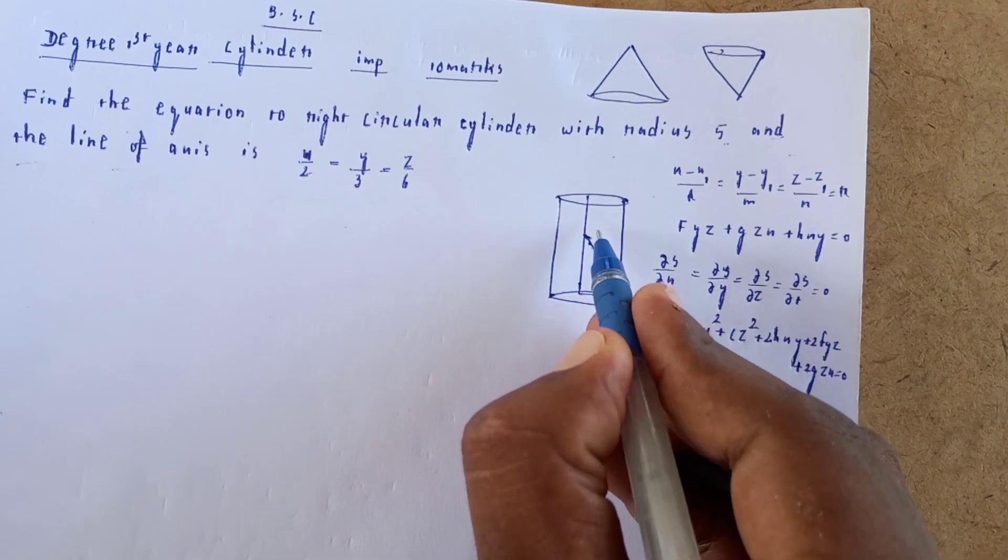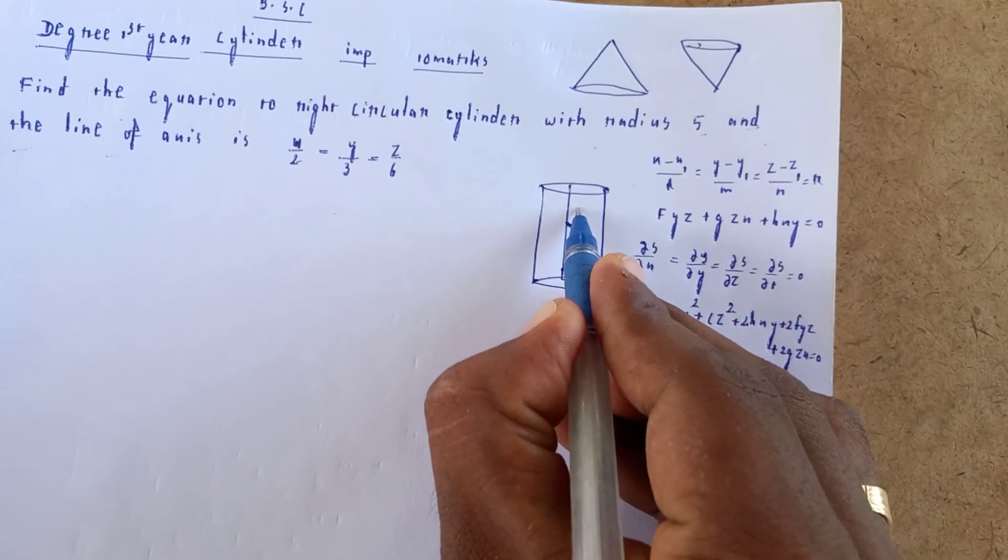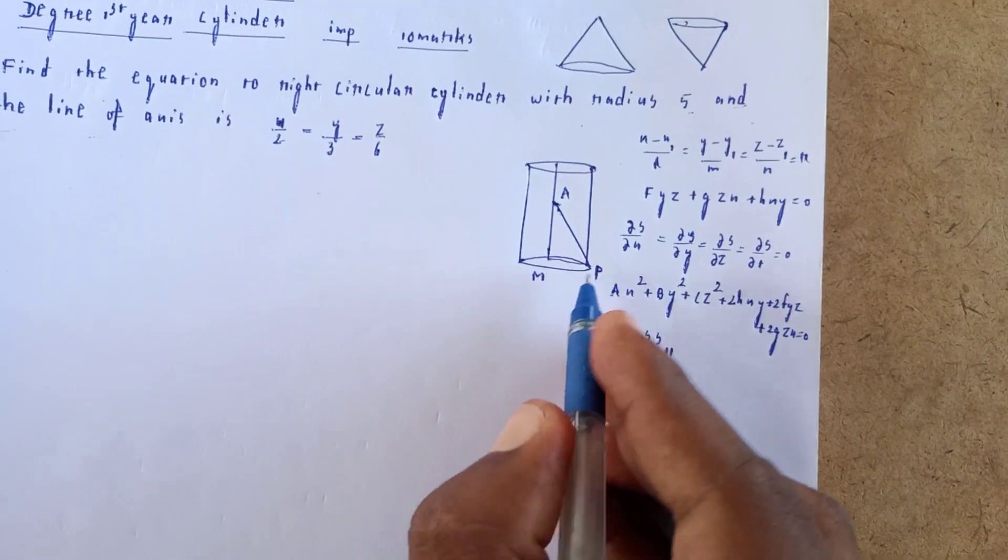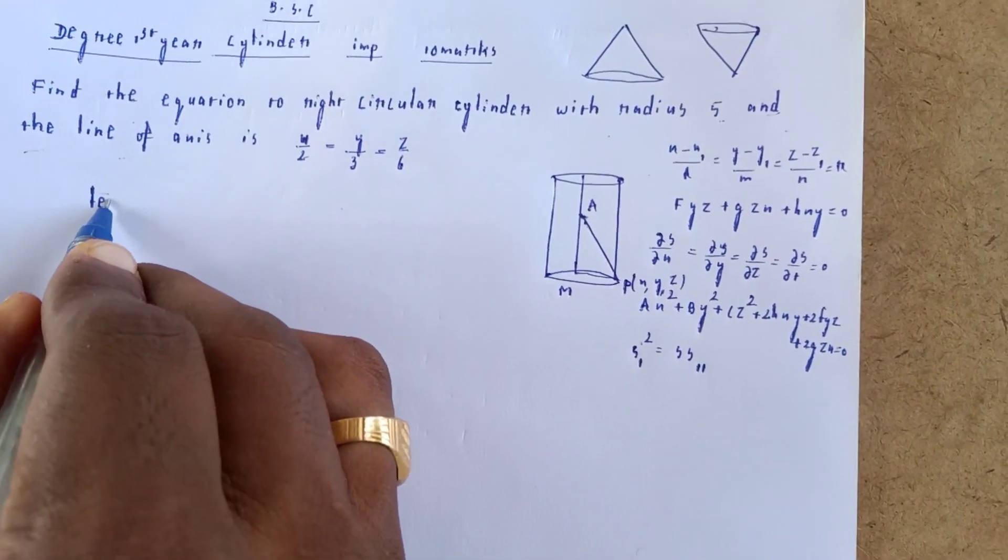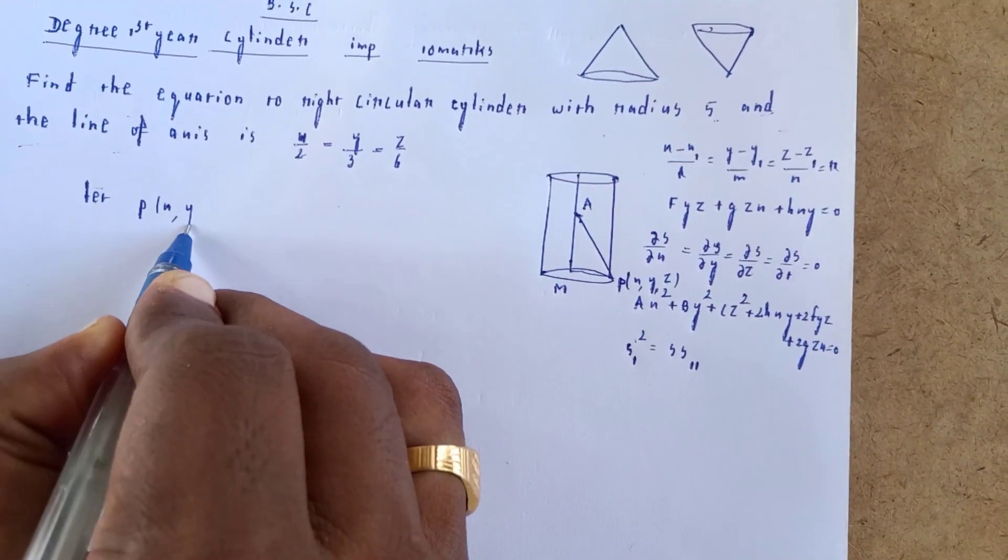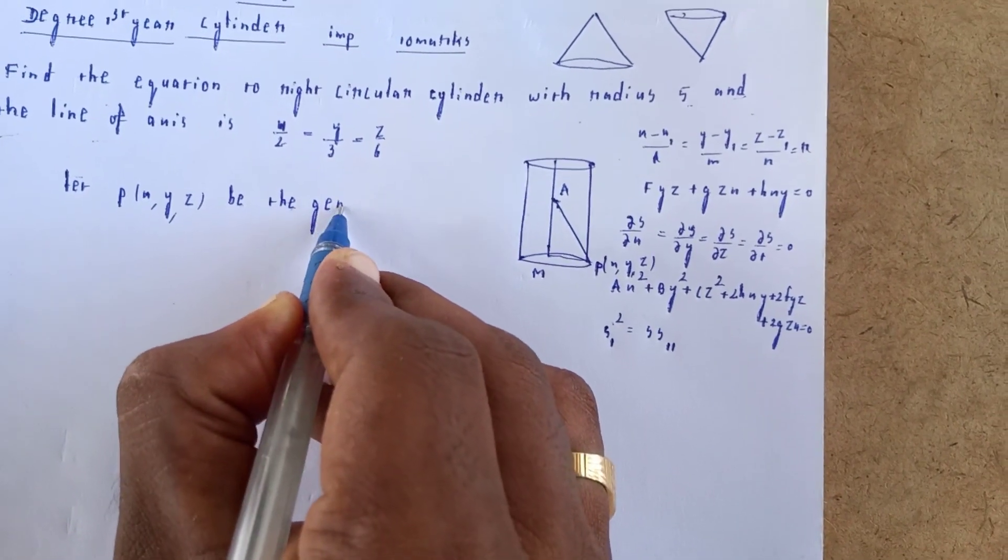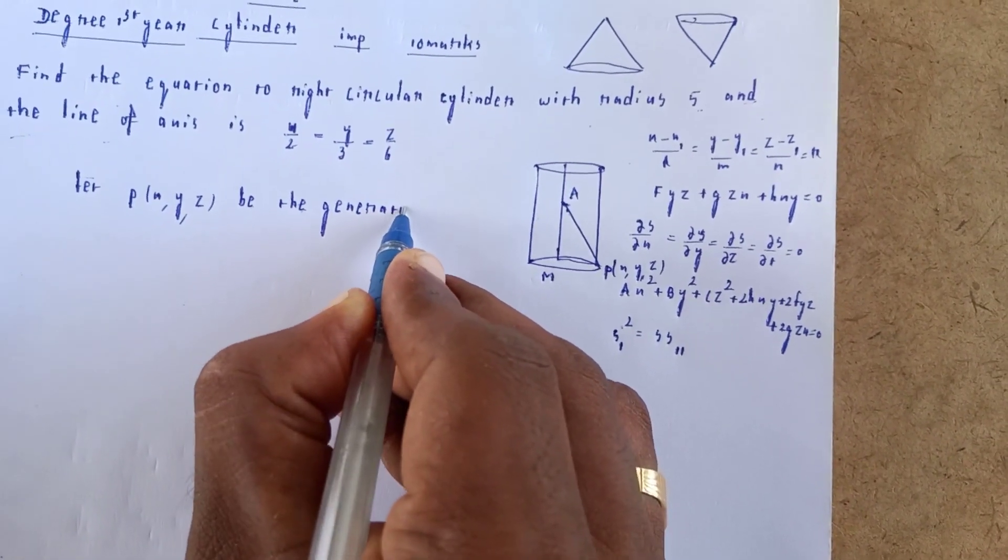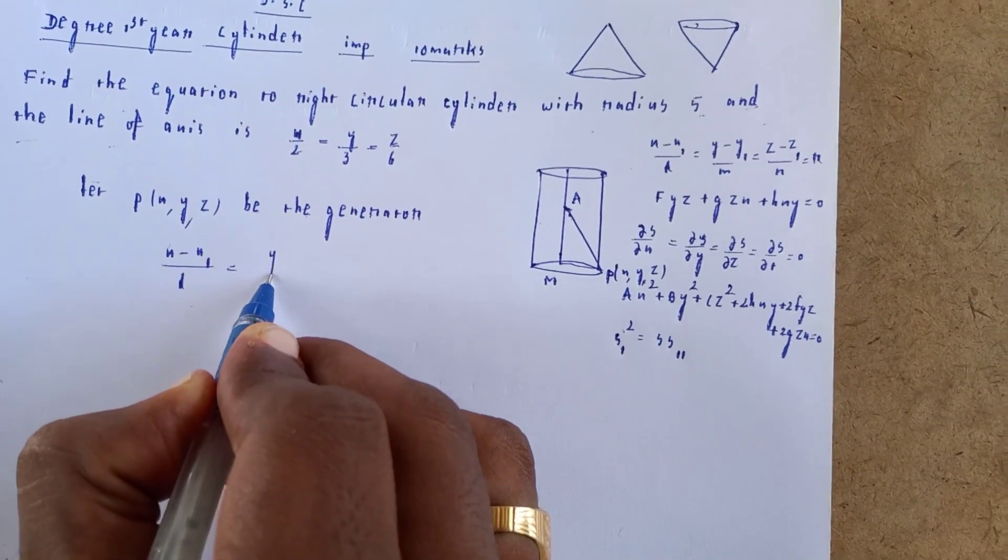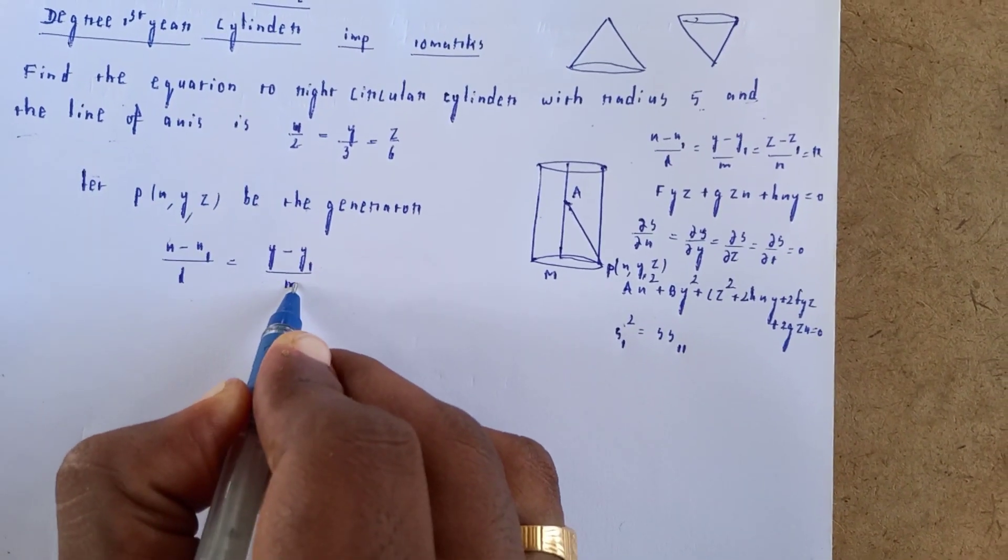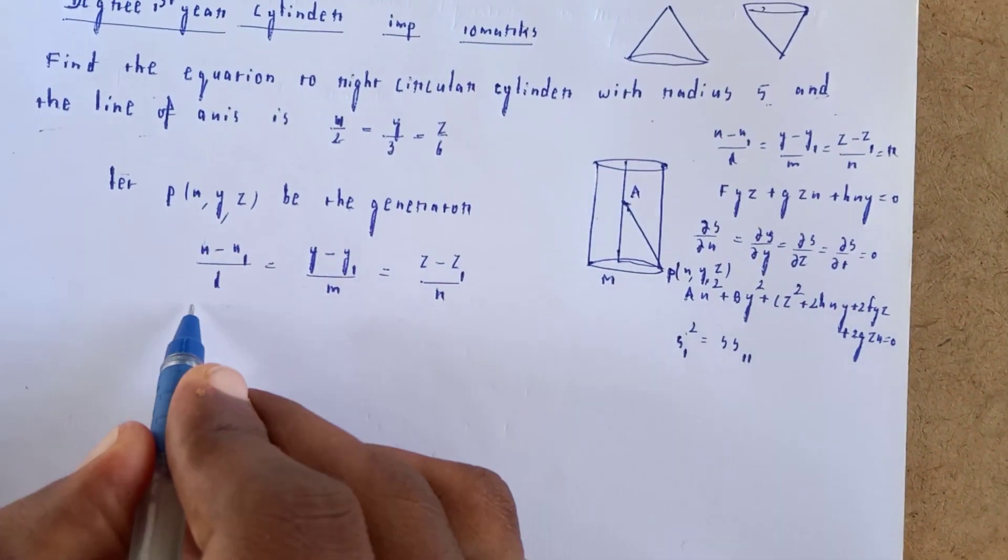Through some point, let point P be at (x, y, z). The generator of the cylinder is (x - x₁)/l = (y - y₁)/m = (z - z₁)/n.